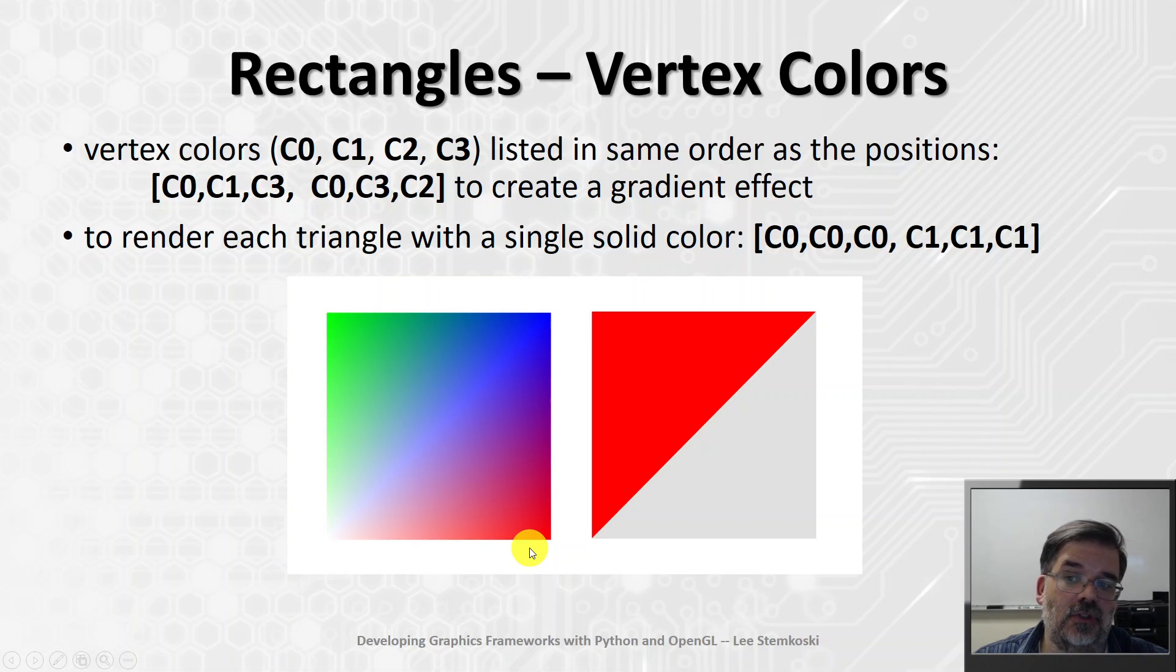Now, if you wanted to render each triangle with a single solid color, you could do that too. For example, I could list the colors in this order, C0, C0, C0. That will color those three, the first color. And then C1, C1, C1. That will color these vertices the next color. And notice that each vertex, or each position rather, can have more than one color. It depends on which triangle that vertex is considered to be a part of. At some times, this position might be considered color C0. And at other times, this position may correspond to color C1. It all depends on the way these are arranged and grouped.